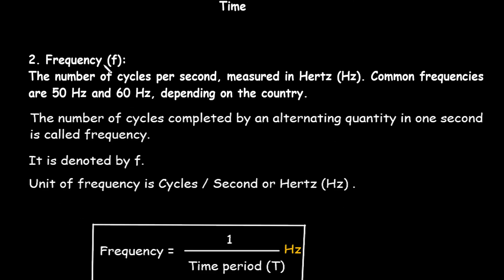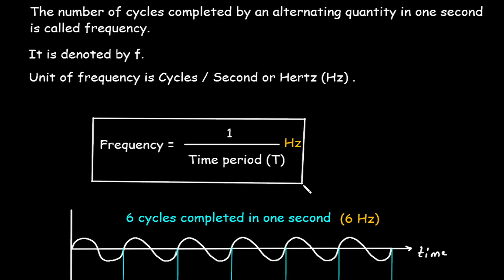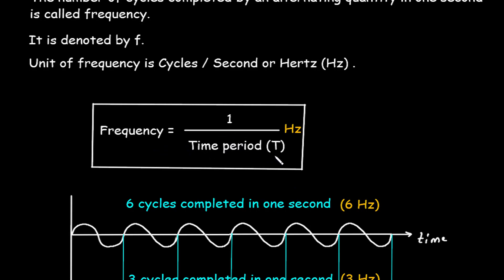Next is frequency, denoted by small f. The number of cycles per second, measured in hertz. Common frequencies are 50 Hz and 60 Hz depending on the country. The number of cycles completed by an alternating quantity in one second is called frequency. Its unit is cycles per second or hertz. Frequency is equal to 1 divided by time period, so frequency is the reciprocal of time period. Its unit, hertz, is represented by capital H and small z.